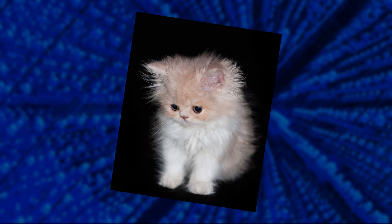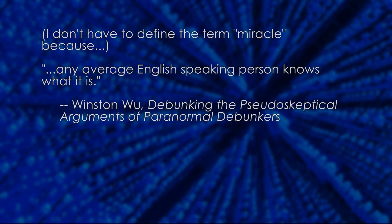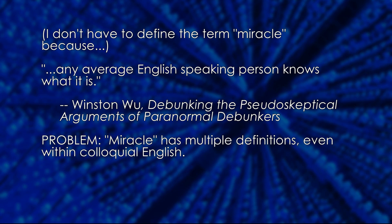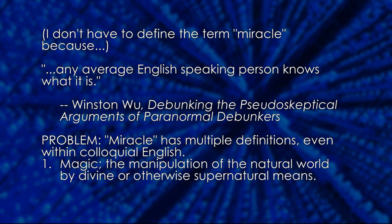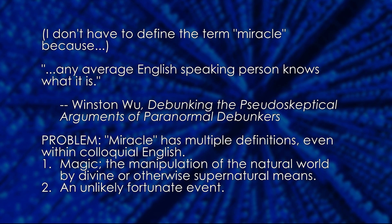When talking about miracles, Winston Wu explicitly refuses to define what a miracle is, since — quote — any average English-speaking person knows what it is — unquote. The problem is that the word has more than one meaning, even within colloquial English. Miracle can be synonymous with magic — that is, the manipulation of the natural world by divine or otherwise supernatural means, such as Jesus turning water into wine and returning from the dead. But it can also mean unlikely fortunate event, as in: it's a miracle that I won the lottery just when the bank was about to take my house.